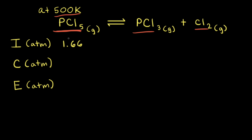Our goal is to calculate the equilibrium partial pressures of these three substances: PCl5, PCl3, and Cl2. And from those equilibrium partial pressures, we can also calculate the Kp value for this reaction at 500 Kelvin. To help us find the equilibrium partial pressures, we're going to use an ICE table, where I stands for the initial partial pressure in atmospheres, C is the change in partial pressure, and E stands for the equilibrium partial pressure.